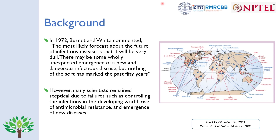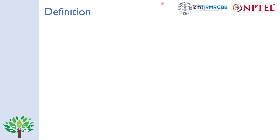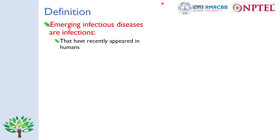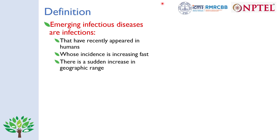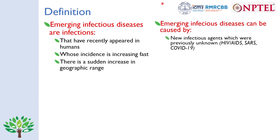As seen from a map, there have been several diseases which have emerged or re-emerged during the last few decades. Emerging infectious diseases are infections that have recently appeared in humans, or whose incidence is increasing fast, or there has been an increase in geographic range. They can be caused by new infectious agents previously unknown, like HIV causing AIDS, SARS, and COVID-19 caused by the SARS coronavirus 2.